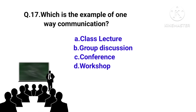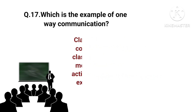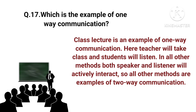Which is an example of one-way communication? Options: class lecture, group discussion, conference, or workshop. The right answer is option A — class lecture. Class lecture is an example of one-way communication, where the teacher delivers content and students listen. In all other methods, both speaker and listeners actively interact, making them examples of two-way communication.